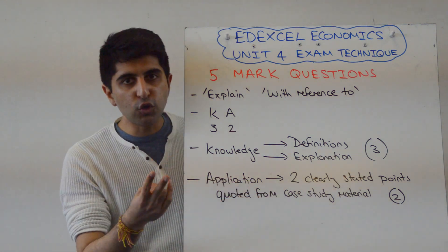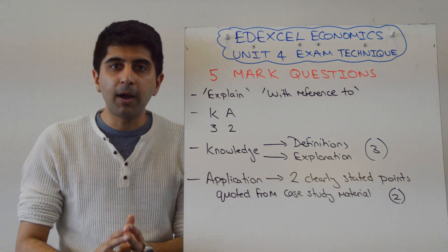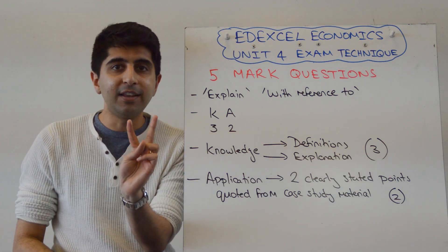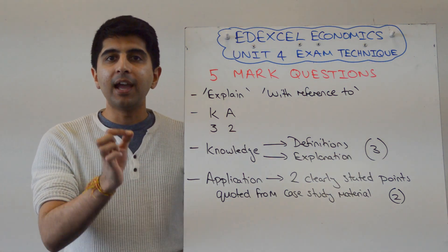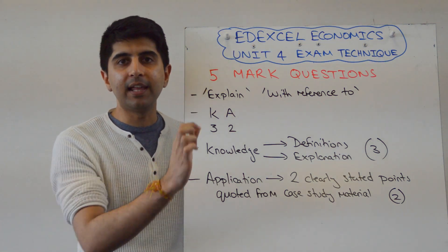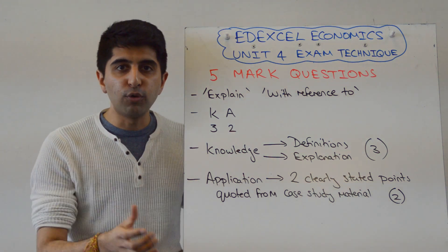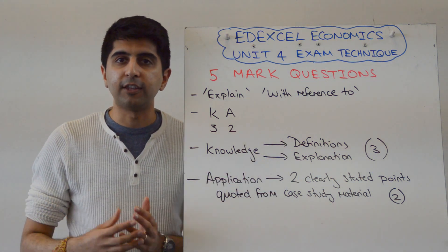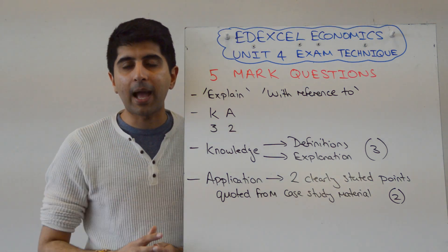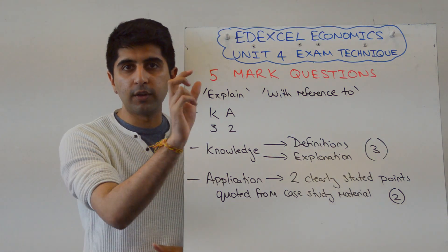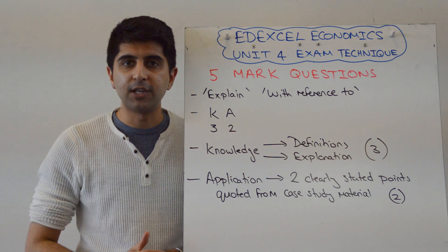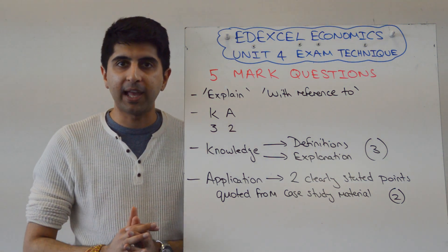Then you're looking for two application marks. To get the marks, you need to make two very different application points. Quote something explicitly from the data, which proves your understanding of whatever it might be that they're asking you in the question. Two specific application points, two direct quotations from the case study material, and you've got your two marks for application.